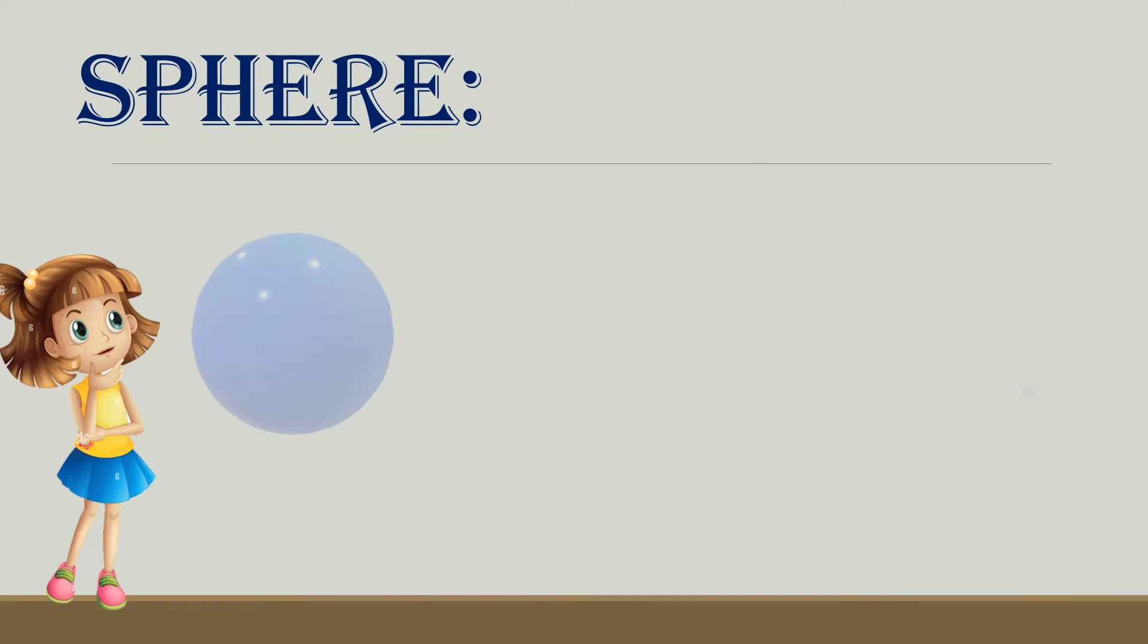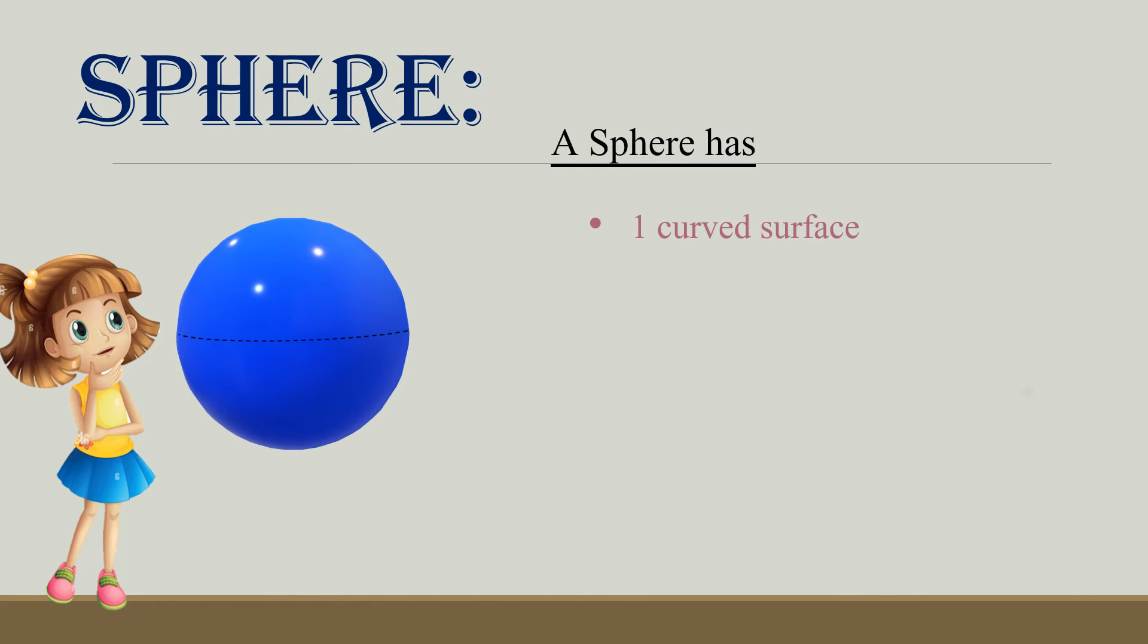Sphere. A sphere has one curved surface, zero edges, and zero vertices. So, a sphere has one curved surface, no edges, and no vertices. Examples: marbles and ball.